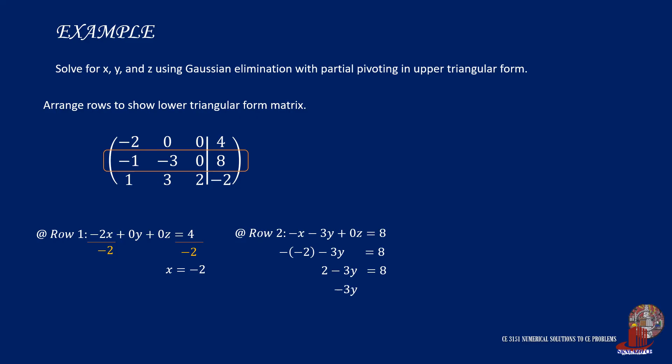Then transposing constants, we have negative 3y is equal to 6. From here on, we can divide both sides by negative 3 to arrive at y as equal to negative 2.